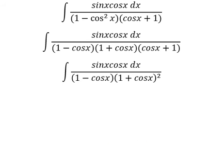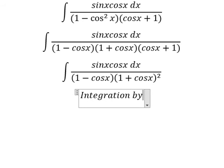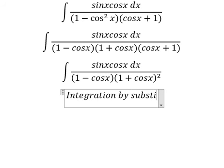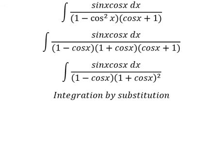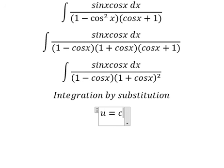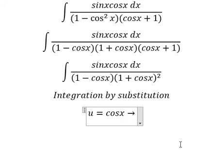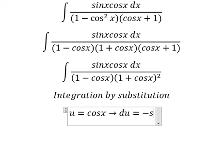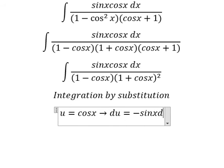Next, we need to use integration by substitution. I will let u equal to cos(x). Taking the derivative of both sides, we get du equal to negative sin(x) dx.